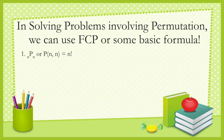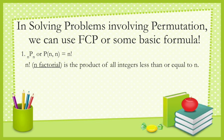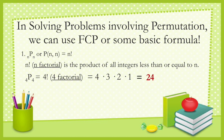Permutation of n taken n, or P(n, n), is equal to n factorial, which means the product of all positive integers less than or equal to n. For example, permutation of four taken four is equal to four factorial, that is four times three times two times one, which equals 24.